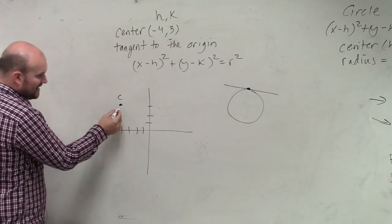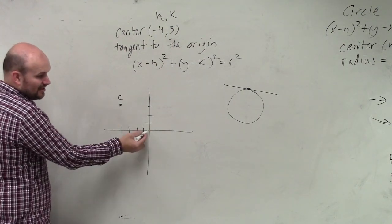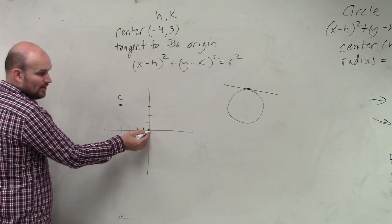So if my circle that has a center here is tangent at 0, 0, that means it crosses there at one point.